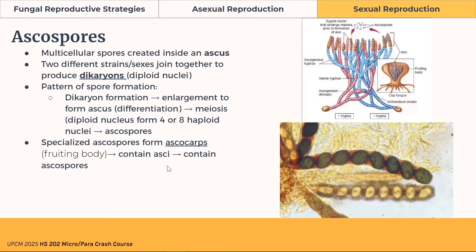Next are ascospores — multicellular spores created inside an ascus. Two different strains or sexes join together to produce dikaryons with diploid nuclei. Dikaryon formation enlarges to form an ascus or the specialized fruiting body (ascocarp), then undergoes meiosis to form 4–8 haploid nuclei and then ascospores. The ascocarp contains the asci, which contain the ascospores.